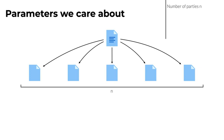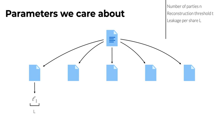We will denote the number of parties or shares by n. We will denote the reconstruction threshold by small t, so t or more shares can reconstruct the secret and fewer than t shares learn no information. We consider leakages from the shares which are arbitrary functions, with the only restriction being that their outputs are bounded by l bits — so each leakage function is applied independently to the shares and produces an l-bit string. We will denote the share size by small p.